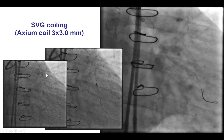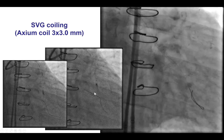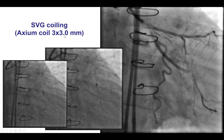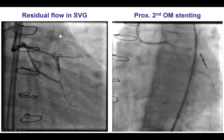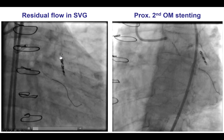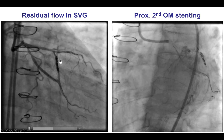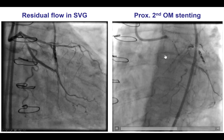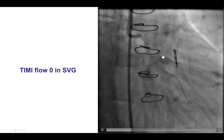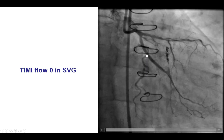That is what we did — we used an Axium coil into the saphenous vein graft. These are 0.014-inch coils that can be delivered through a standard microcatheter. This did cause occlusion, although it takes some time after heparin is stopped for the vein graft flow to completely resolve. Another stent was placed in the proximal circumflex, providing a nice result with occlusion of the vein graft and TIMI flow into the first obtuse marginal branch.